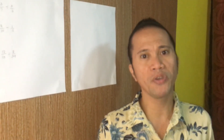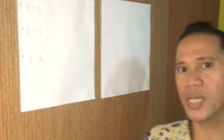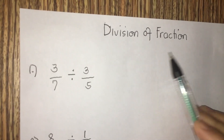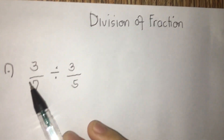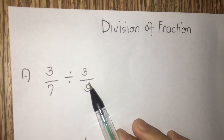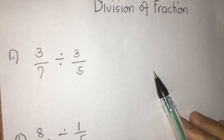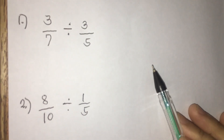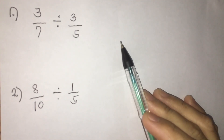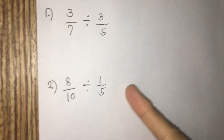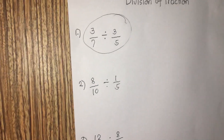Good day everyone, welcome back to Ram's Tutorial. If you are new here in my channel, please don't forget to subscribe and hit the notification bell so that you're updated on my latest videos. Today class, we are going to discuss our topic: division of fractions. Remember, when we divide fractions, we write division as related to multiplication — you multiply the dividend by the reciprocal of the divisor. For example, number one: 3/7 divided by 3/5.